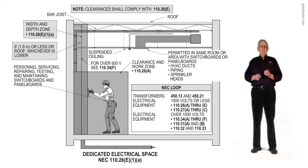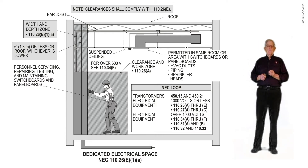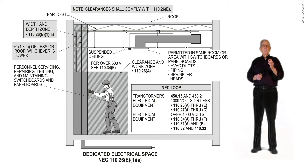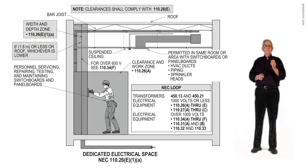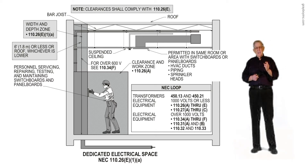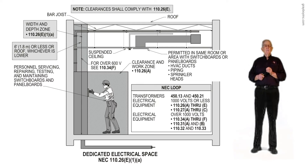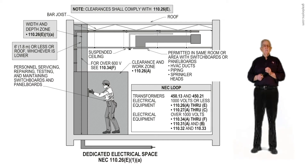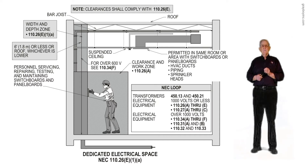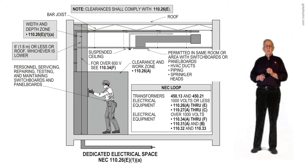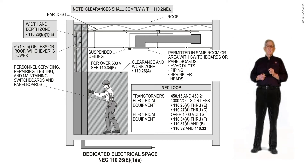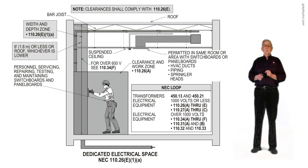If they happen to be circuit breakers, chapter 17 of the 70B document also has to be reviewed. Notice the width and depth zone is 110.26 E as in Ed, 1, little A. And notice the six-foot rule or less above the electrical equipment is shown, going all the way up to the roof level with a suspended ceiling installed between that six-foot, which is legal by code.